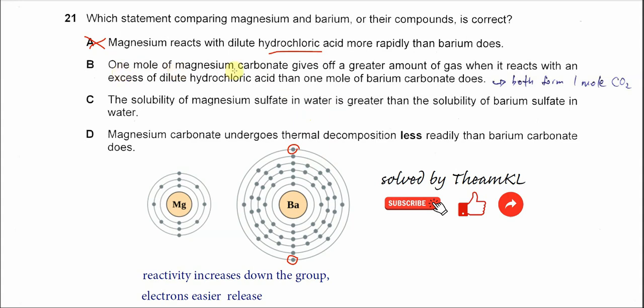For B, one mole of magnesium carbonate gives off a greater amount of gas when it reacts with excess dilute HCl than one mole of barium carbonate. They are both group 2 carbonates, so eventually they will form the same number of moles of CO2. So this one is also wrong.